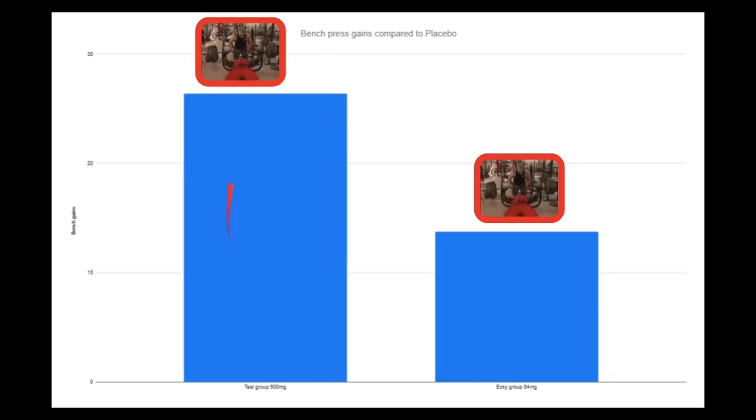But remember, the testosterone group was taking 600 milligrams of test a week. That's a lot, compared to 84 milligrams of ecdysterone. So even if you factor out the weight of the ester, that's still a substantial difference. You're looking at about 420 milligrams of testosterone compared to 84 milligrams of ecdysterone if you remove the testosterone ester.